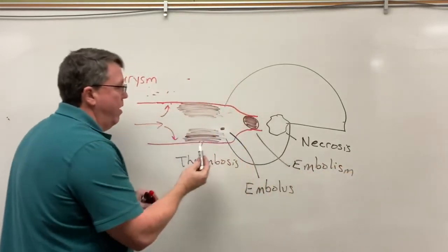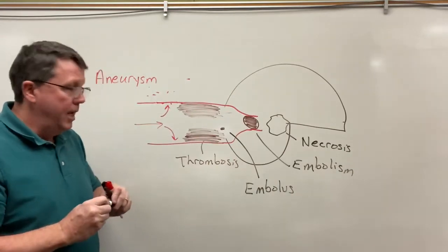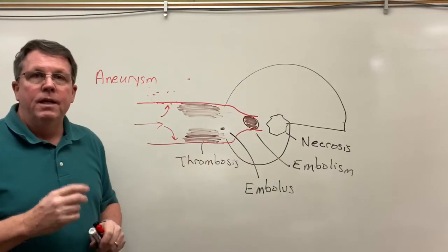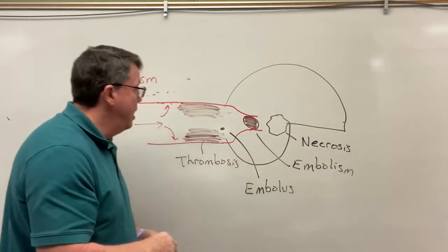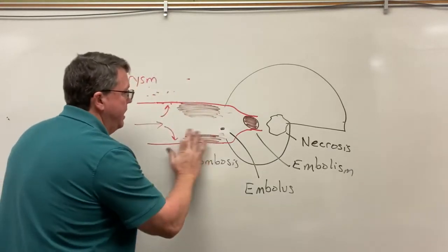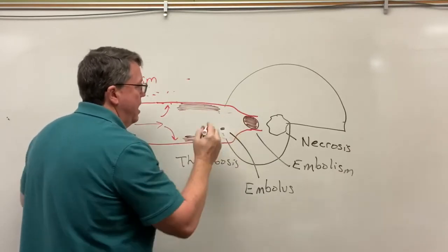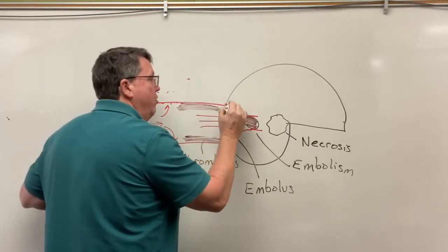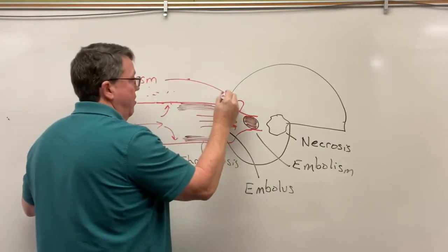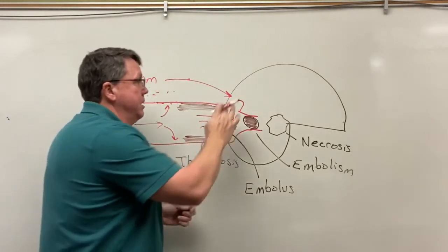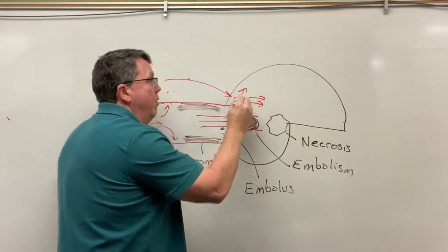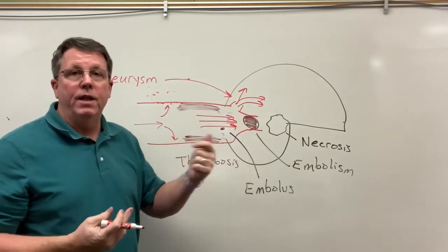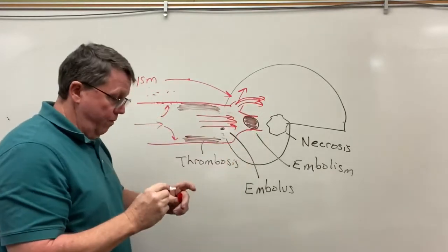When the thrombosis breaks off and is traveling it's called an embolus; when it gets stuck it's called an embolism. The embolism then causes blood pressure to build up against the vessel walls, creating an aneurysm again — which can burst open. This is what people sometimes refer to as blood on the brain. These scenarios all lead to hemorrhagic strokes.